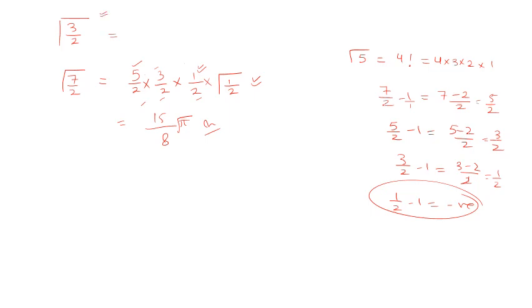Similarly, if you have to find out the value of gamma 3 by 2, subtract 1 from 3 by 2, which is half, and then gamma of half, which we know is root pi. Gamma half is root pi, right?